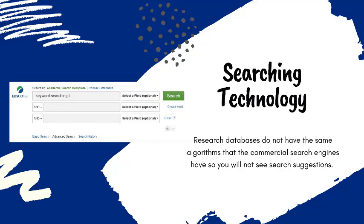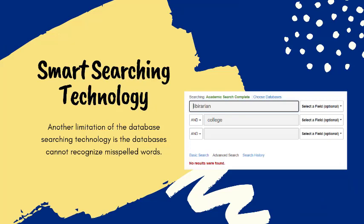The databases available through the libraries do not have smart searching built in yet. If I were to type out my research question in the database search field, the database will focus on the keywords in the question. The database will often ignore or skip small and common words like because, of, the, a, and if, because these words will show up in almost every article in the database and you'll be overwhelmed with search results.